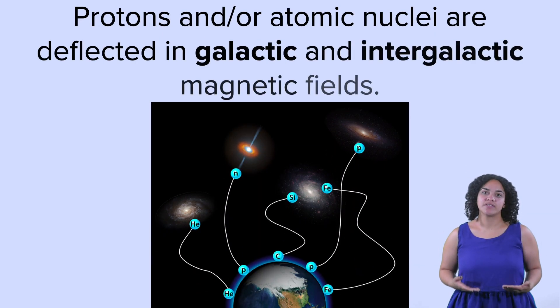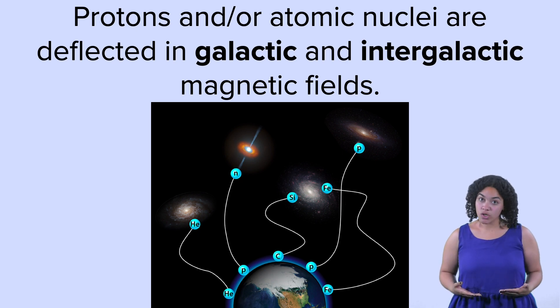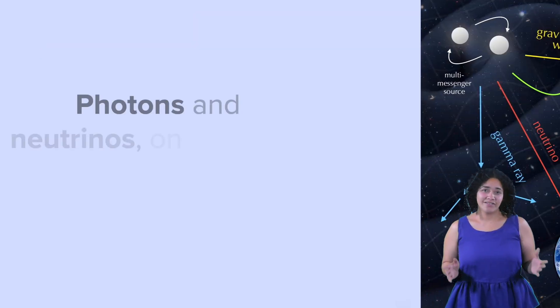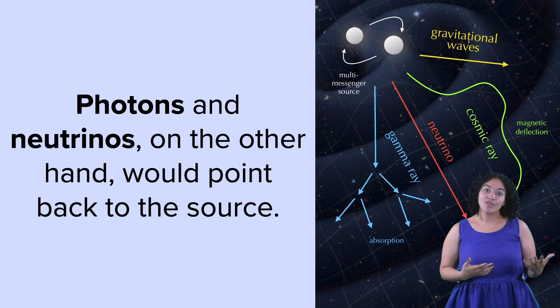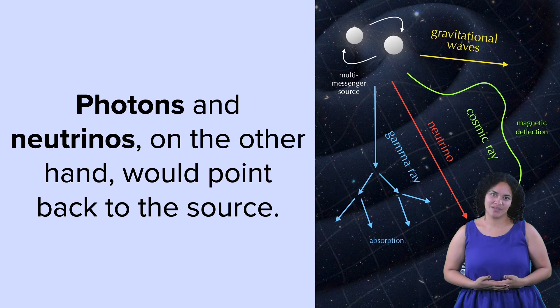The reason the sources of these cosmic rays are still unknown is because of these high energies, particles, mostly protons and other heavier nuclei, get deflected by the galactic and intergalactic magnetic fields. Hence, their arrival direction does not point back to the sources, whereas neutrinos and photons do point back to the sources.